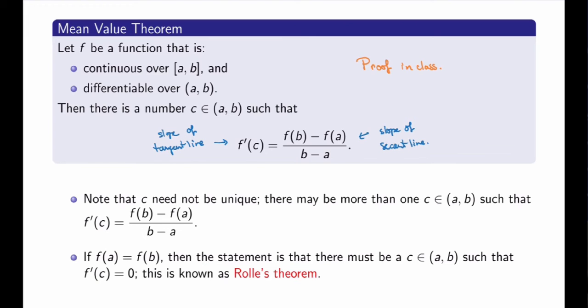Before we move on to an example, there are two comments I want to make. First, c here does not need to be unique — just like for the intermediate value theorem, there may be more than one c such that the tangent line is parallel to the secant line. The statement of the mean value theorem is an existence statement: there exists such a c, but there may be more than one.